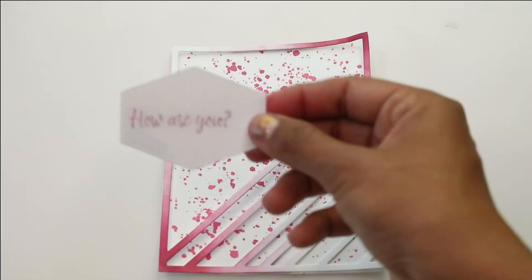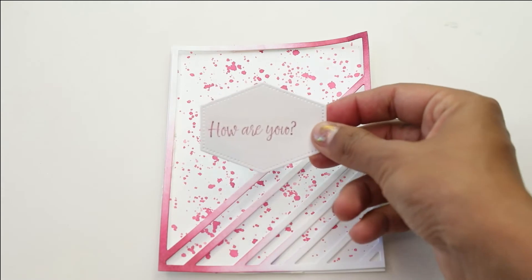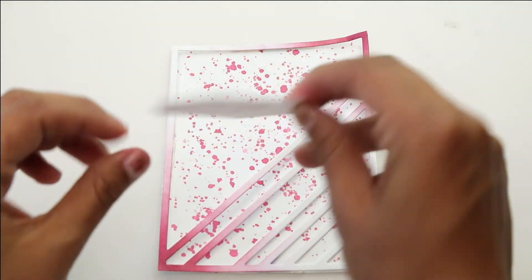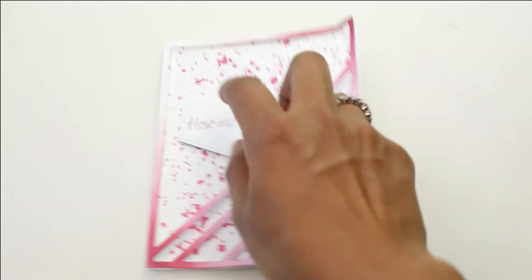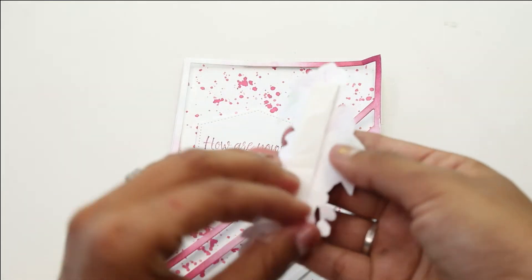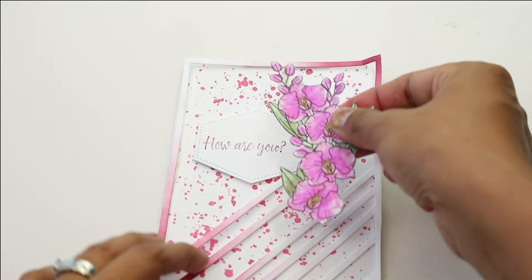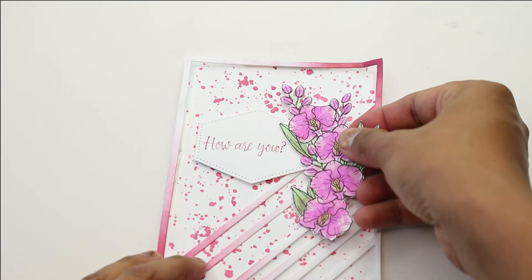So once I have my edge trimmed, I'm gonna go ahead and add the sentiment. I have the how are you? And I added a bit of foam adhesive on the back, just to give that some dimension and raise it up. We're gonna place it, trying to put it up on the corner center. And then we're gonna add that beautiful flower.